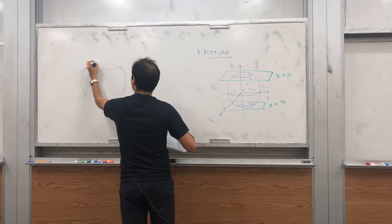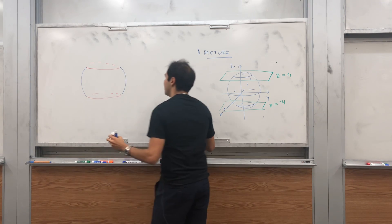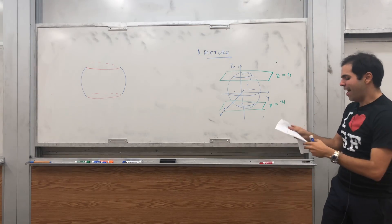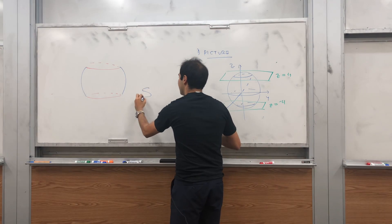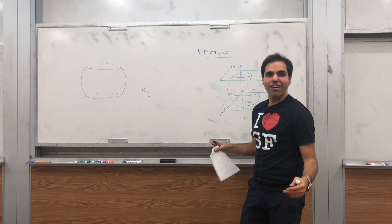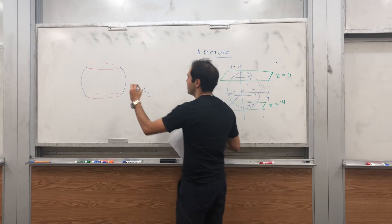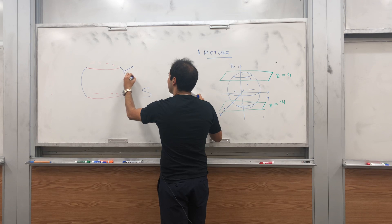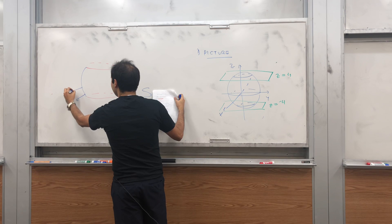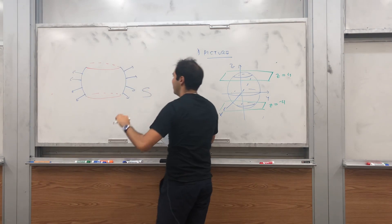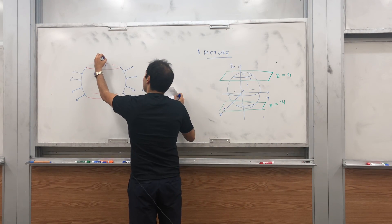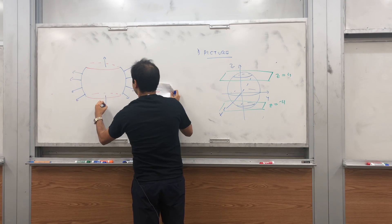It looks something like a beer barrel, or more like a chopped-off apple. This is S. Usually the orientation is specified; if it's not, I just assume it's the outward orientation. To calculate surface integrals you need a normal vector, and we assume it points outwards — on top it points upward, and at the bottom it points downward.